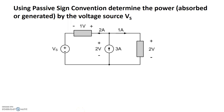Welcome. In this example, we will use the passive sign convention as well as the law of energy conservation to figure out power generated or absorbed by a voltage source, Vs, shown right here.